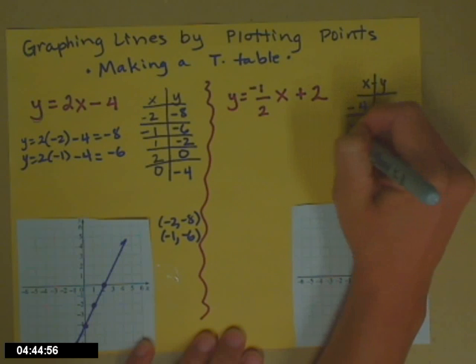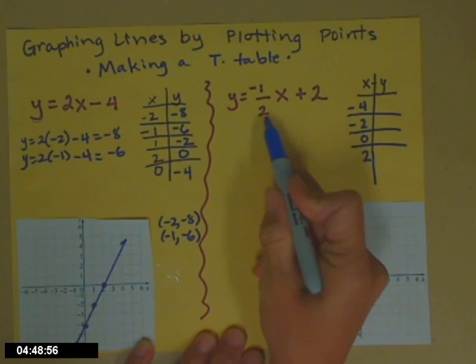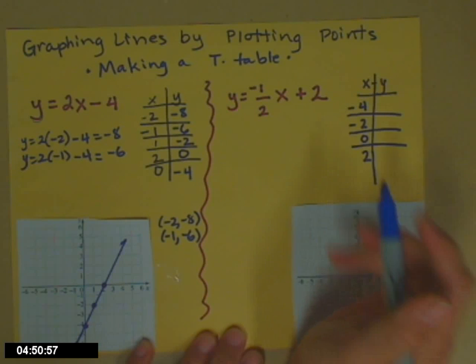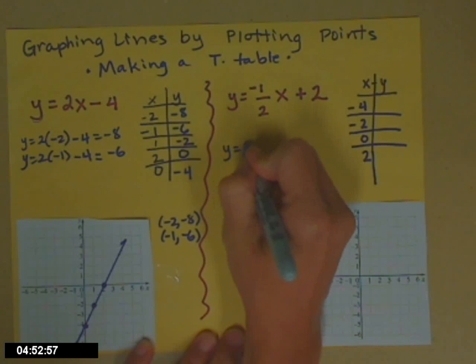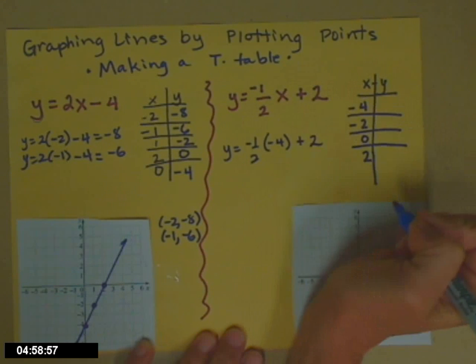So if x is negative 4, again, we're going to go to our equation. And it's going to tell us what the y partner has to be. So y is negative 1 half times x, currently being played by negative 4, plus 2.